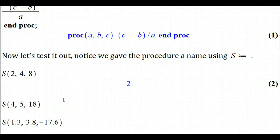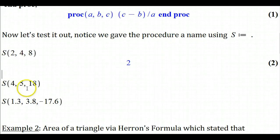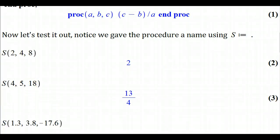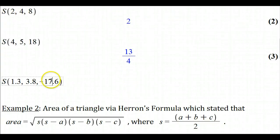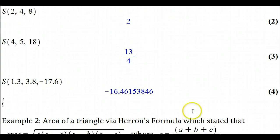2, 4, 8 triangle—that is the solution to that equation is going to be 2. Put 4, 5, 18 in for a, b, and c, the solution is 13 over 4. Put some decimal numbers in, you'll get your solution.